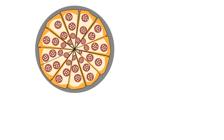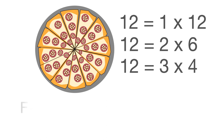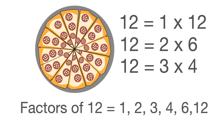We have 12 pieces of pizza. 12 equals 1 times 12. 12 equals 2 times 6. 12 equals 3 times 4. The factors of 12 are 1, 2, 3, 4, 6, and 12. The factors divide 12 completely with no remainder.